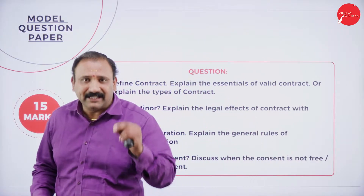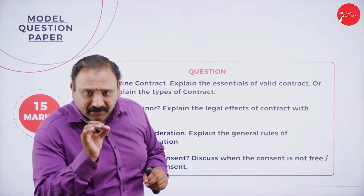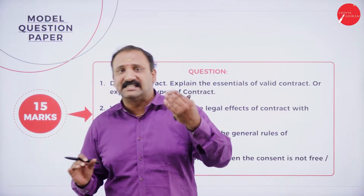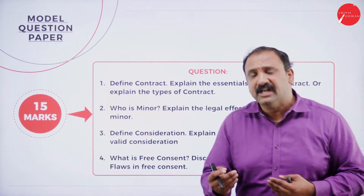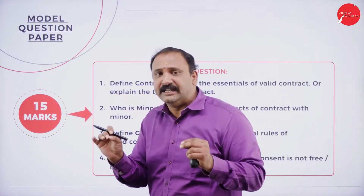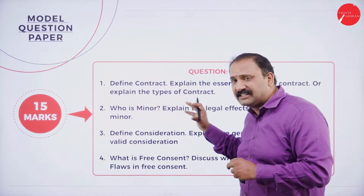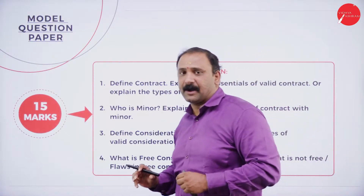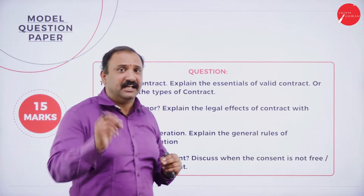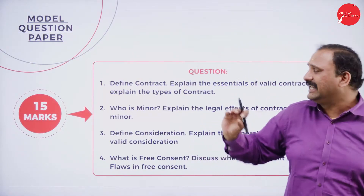A contract is a formal agreement between two parties who have agreed verbally as well as in writing on specific terms and conditions, followed by the essentials of contract. There are seven essentials of contract, starting with consent, then agreement, legality — the contract should not be illegal in nature, should not be void ab initio, and should not involve a minor. When writing a 15-mark answer in a law paper, stick strictly to the prescribed content.